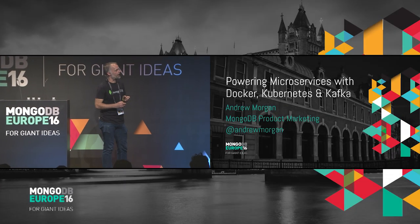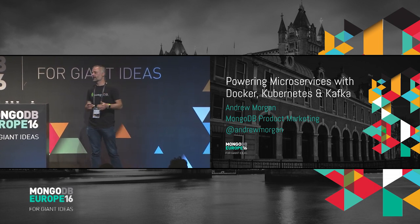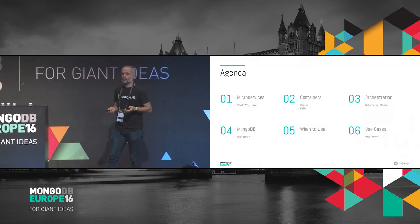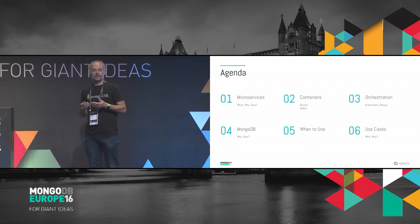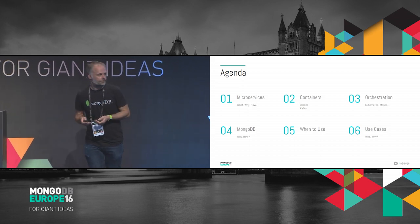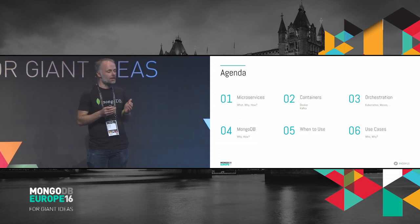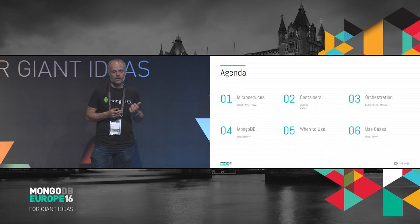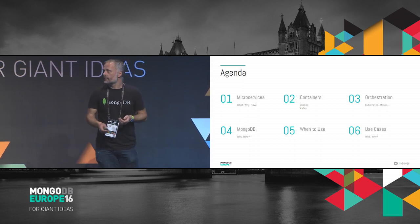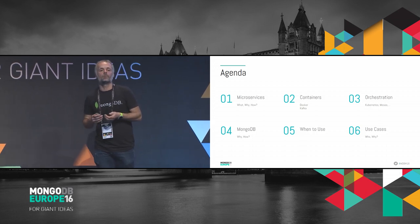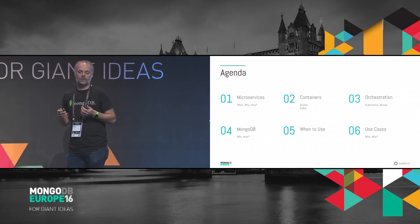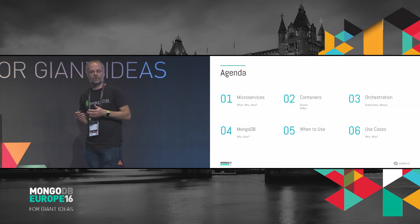We're going to be talking about microservices — a bit about microservices in general, the technology behind them, and because this is a MongoDB conference, we'll also be covering how MongoDB interacts. The agenda: we'll introduce microservices, look at technologies — in particular containers, with the most famous being Docker. We'll also look at Kafka, which is one of the ways of passing information between your containers. Orchestration, so when you've got lots of containers, plugging them together and making everything work nicely. How you use it with MongoDB, when you should use microservices and when you might not want to, and finally we'll close with some use cases.